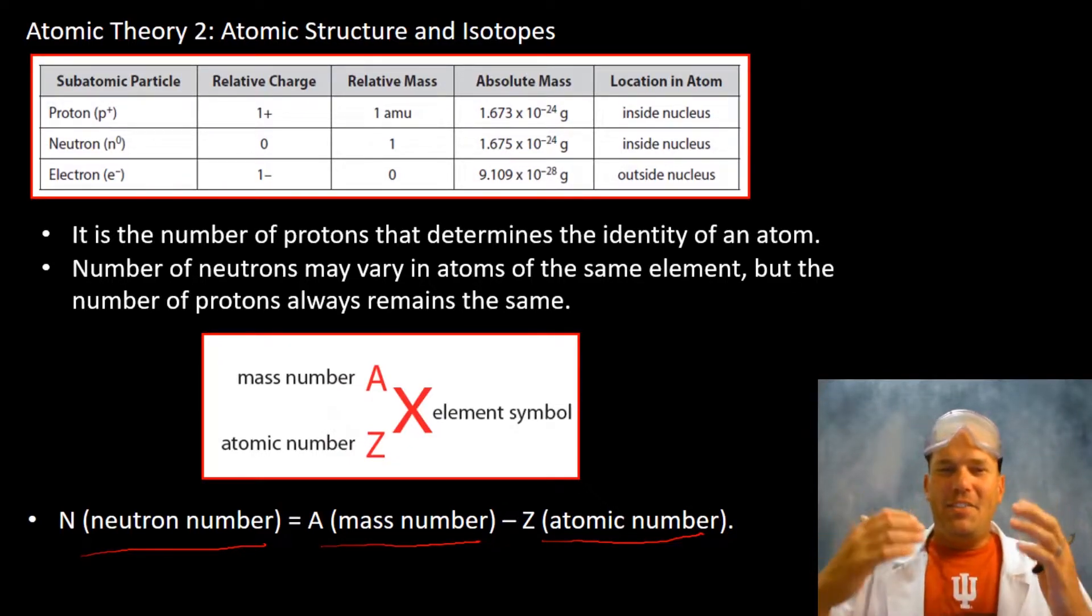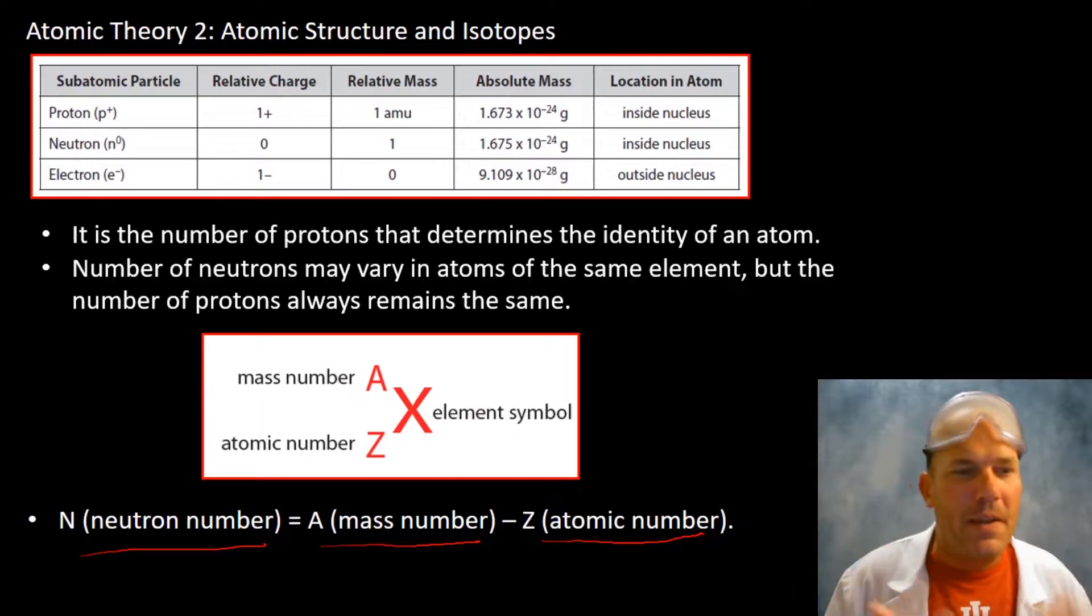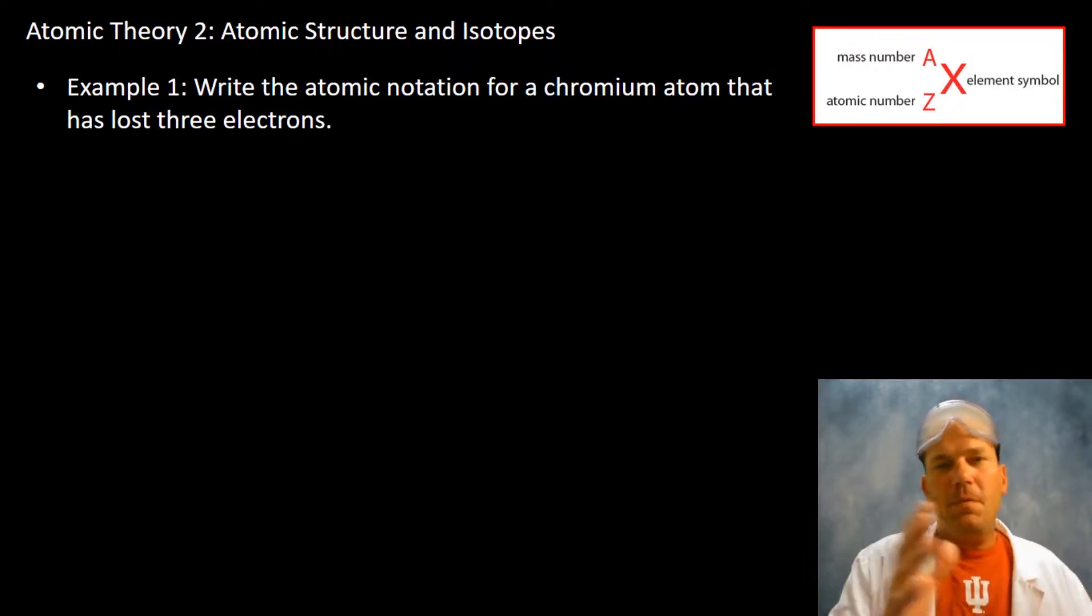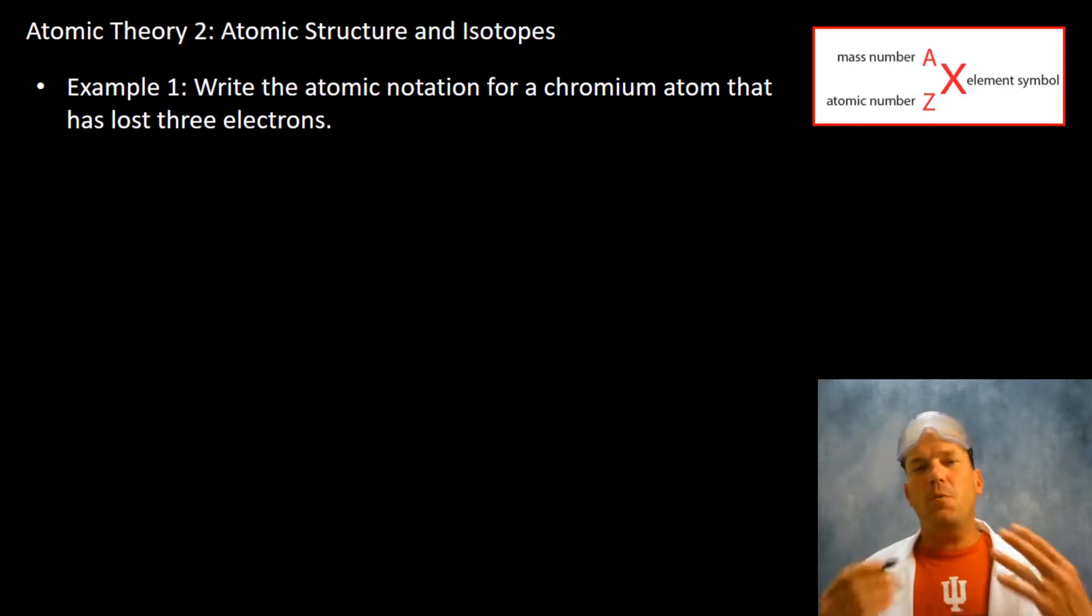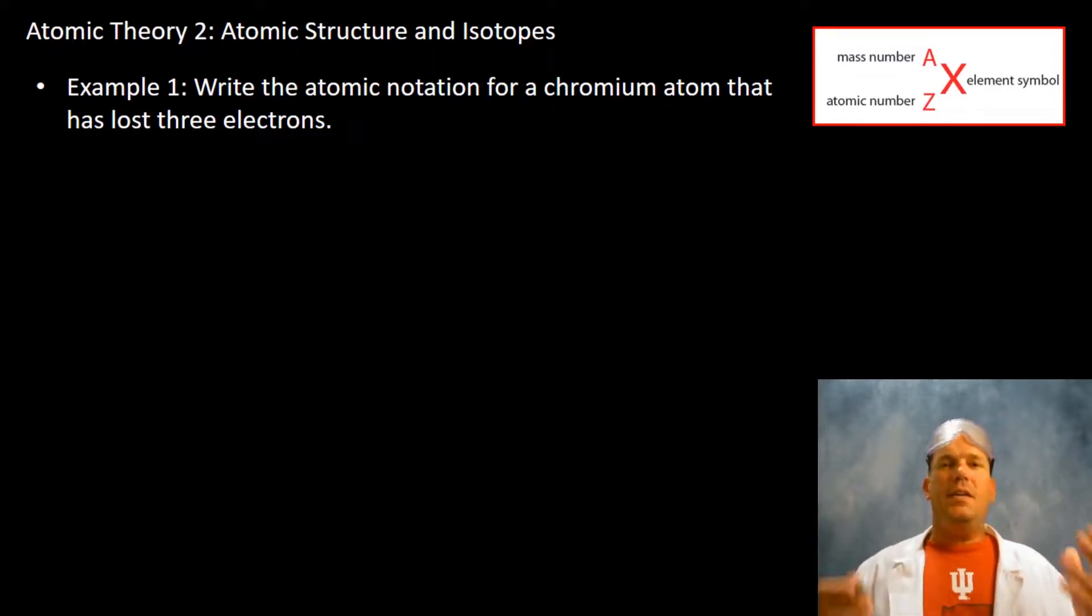And so that leads into our definition for what an isotope is. Let's look at a little example first and then we'll get those remaining definitions down and move into some mathematics. Example one: What is the atomic notation for chromium, an atom of chromium that has lost three electrons?